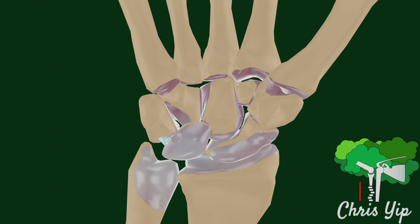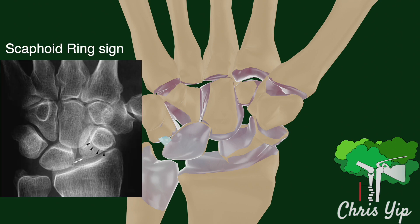As the scaphoid undergoes flexion, also known as rotary subluxation, a scaphoid ring sign may be seen on the PA view of an x-ray. The ring is produced by the segment of the scaphoid that is protruding volarly. A positive sign is seen when the distance between the ring and the proximal pole of the scaphoid is within a certain distance.